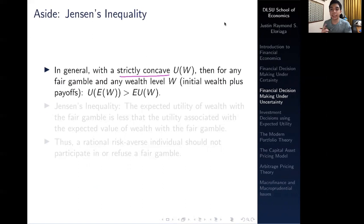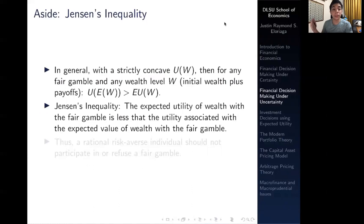The utility of the expected wealth should be greater than the expected utility of wealth. All this is saying is that the expected utility of wealth with the fair gamble is less than the utility associated with the expected value of wealth with the fair gamble. Remember in a fair gamble the payoff is essentially zero because getting a win or loss is the same proportion and the two payoffs cancel out, thus you're left with the expected value of your initial wealth. This is saying that a rational risk averse individual should not participate or refuse a particular fair gamble.